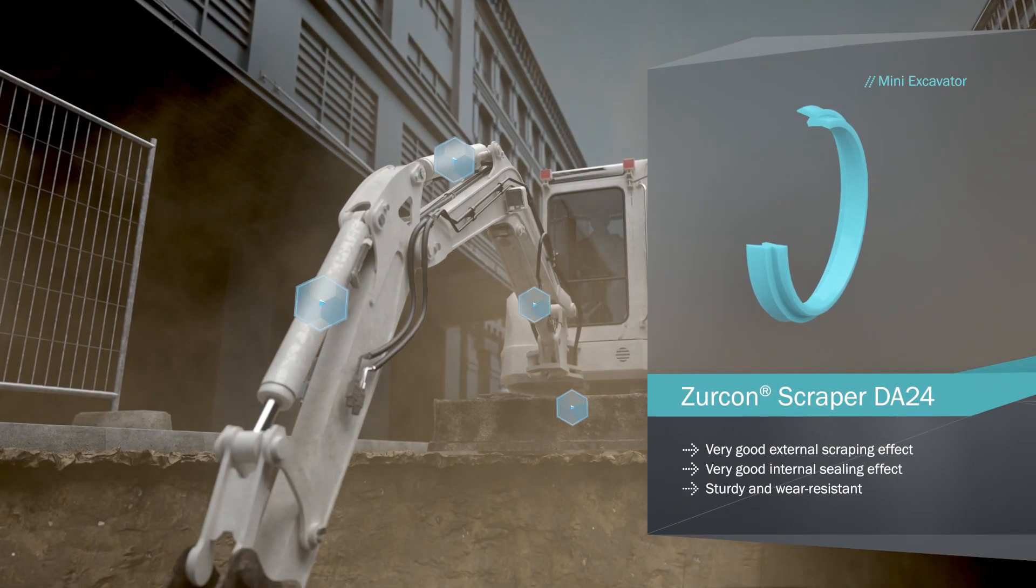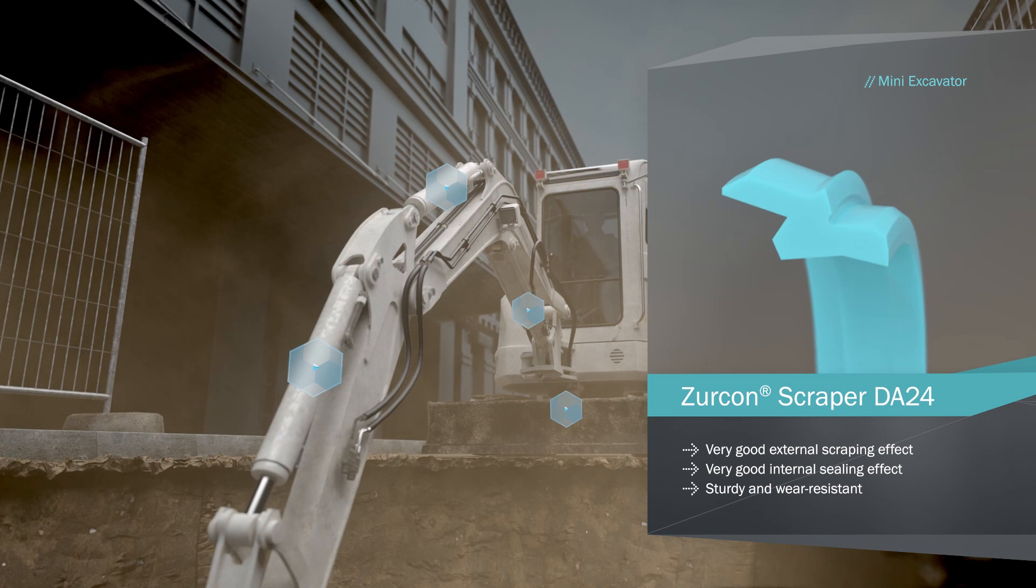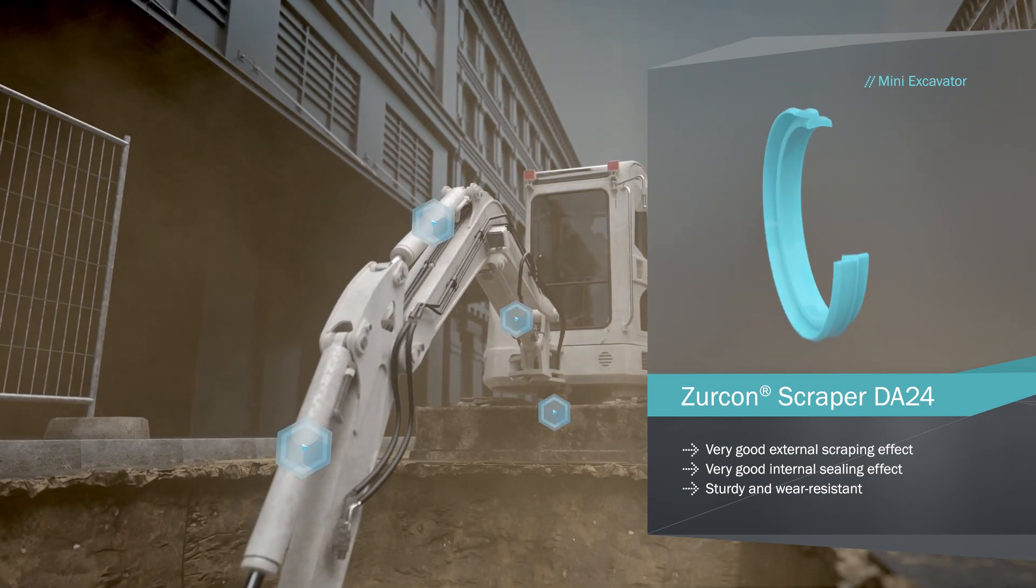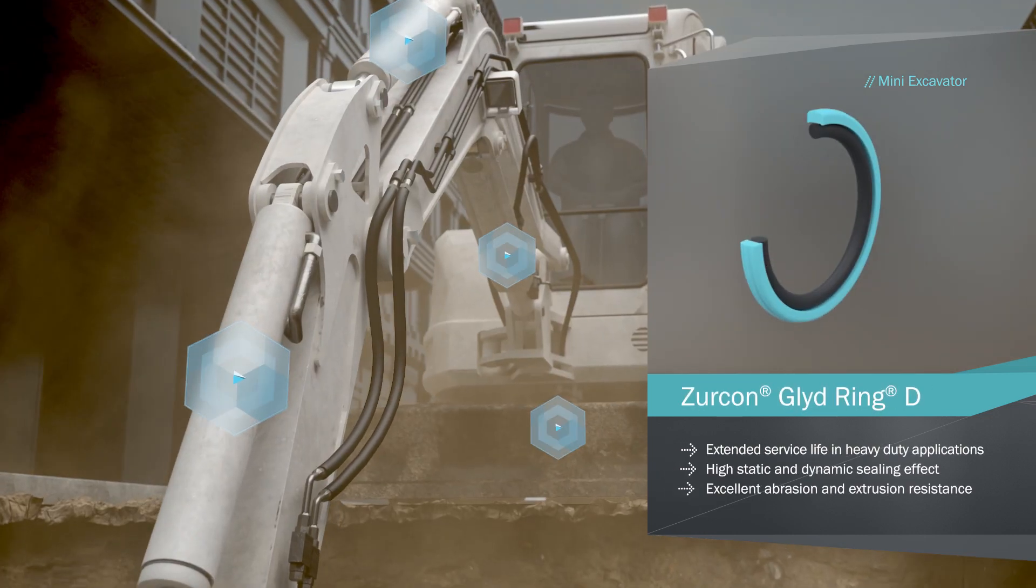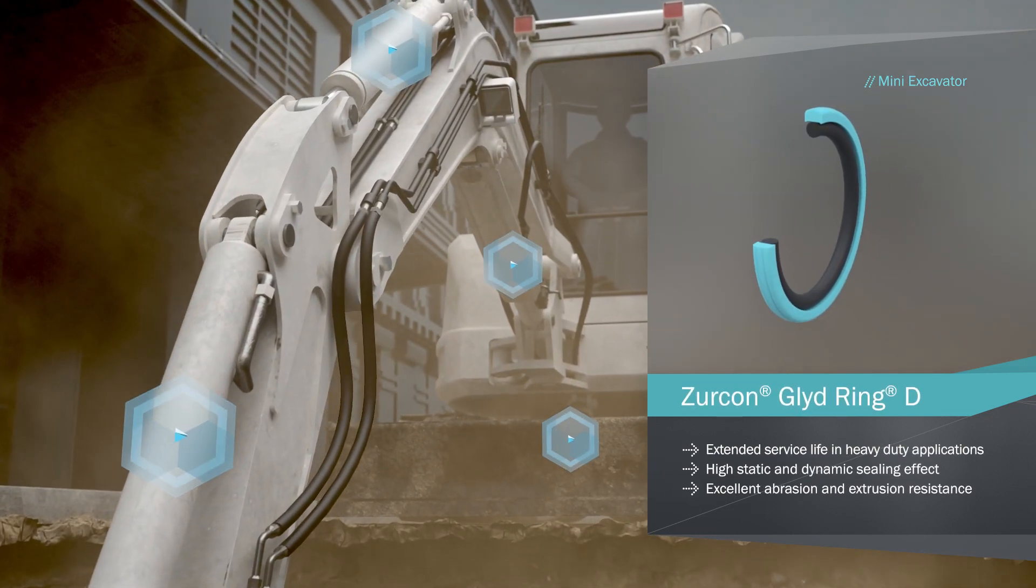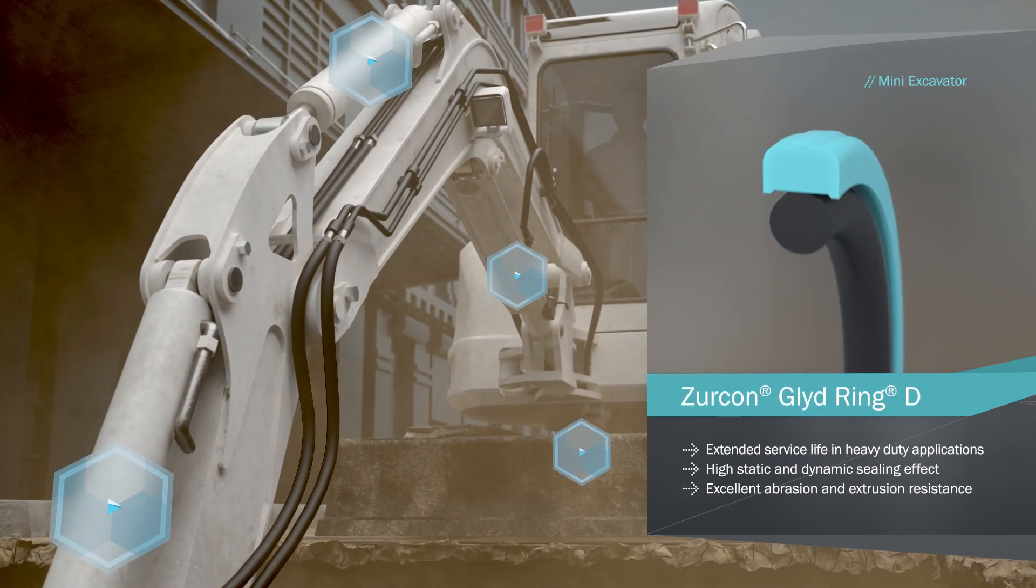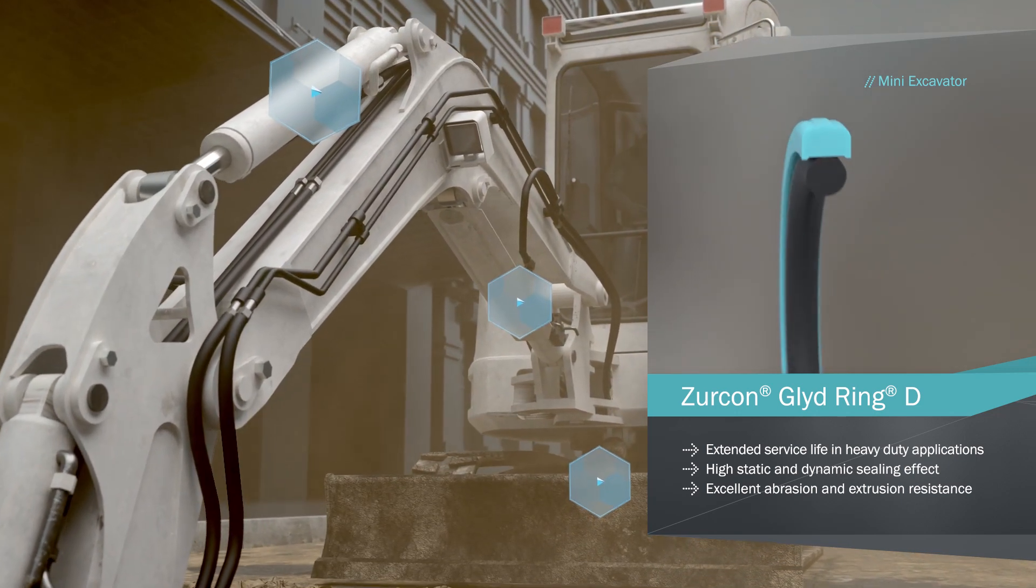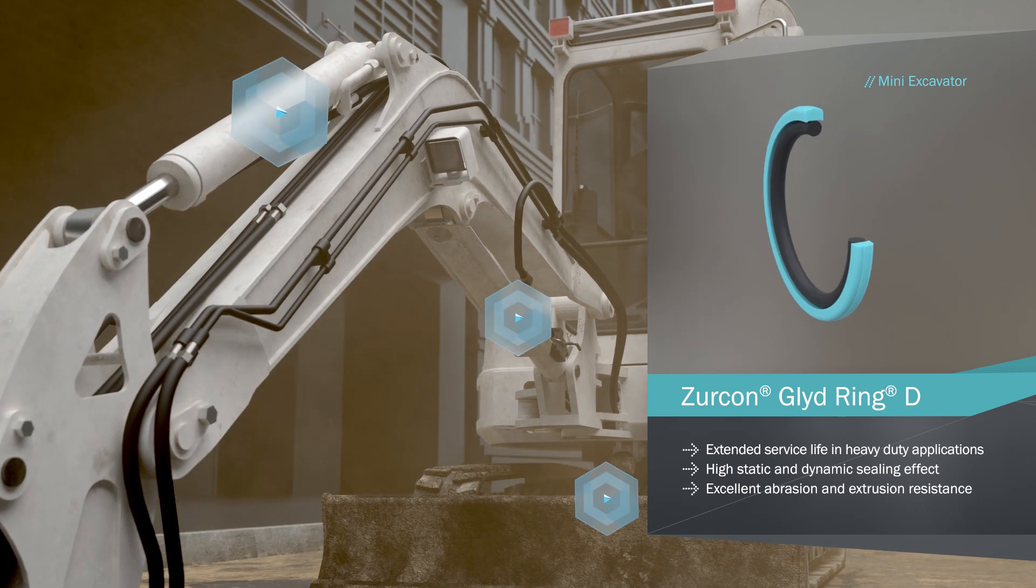A Zircon Scraper DA24 is a double-acting scraper that ensures dirt cannot reach sensitive hydraulic elements. Zircon Glide Ring D features an innovative design, significantly reducing friction and wear. The D-shaped profile prevents blow-by and extrusion.